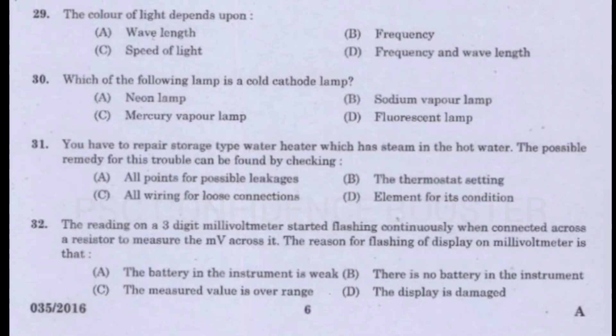Question number 29. The color of light depends upon: Option A - Wavelength. Option B - Frequency. Option C - Sphere of light. Option D - Frequency and wavelength. Answer is Option D: Frequency and wavelength.